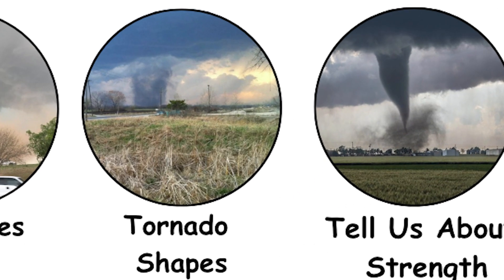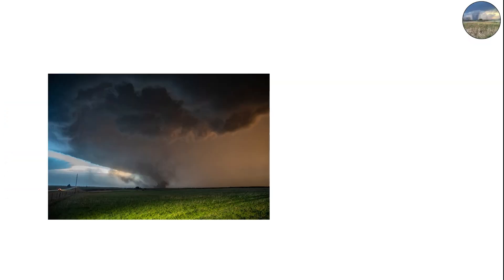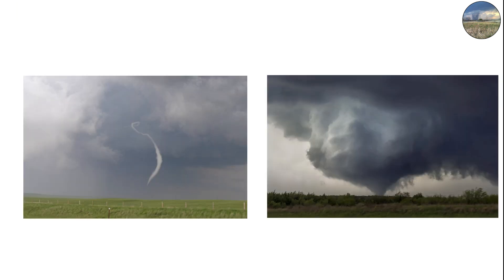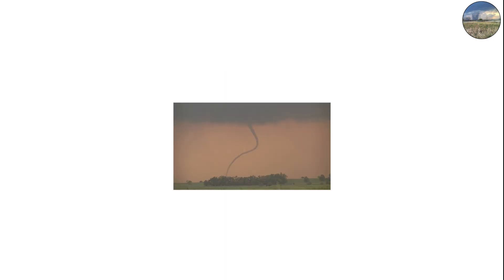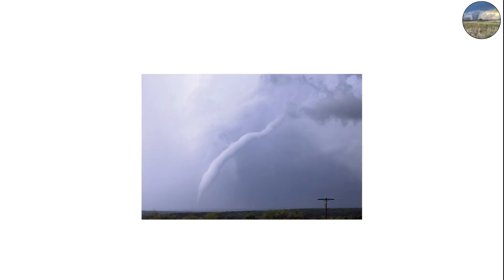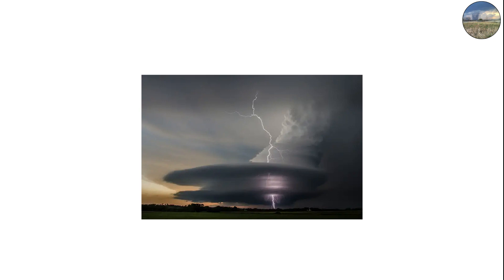Why do tornado shapes change over time? A single tornado can transform through several shapes in just minutes. It might begin as a rope, widen into a cone, evolve into a wedge, and then thin back down as it dissipates. These changes reflect the tornado's life cycle and the balance of forces within the storm.